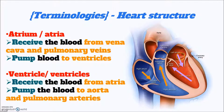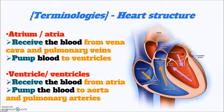For the ventricles, they receive the blood from the atria and then pump the blood to the aorta and to the pulmonary arteries. Once we know the blood flow direction, we can determine the blood content in different blood vessels — for example, the oxygen level, the carbon dioxide level, and also the blood glucose level. So remember, when we talk about the heart chambers and the blood vessels, there are some concepts that are inter-related.